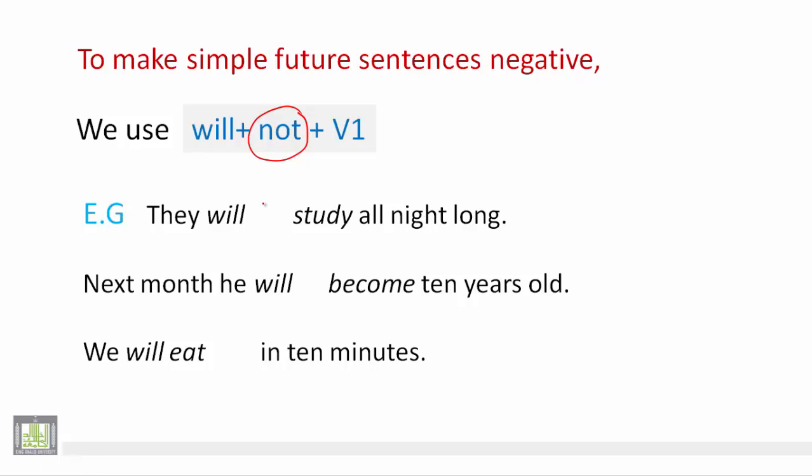They will not study all night long. Next month, he will not become ten years old. We will eat in ten minutes. It becomes, we will not eat in ten minutes. So by this way, we have made all these sentences negative.